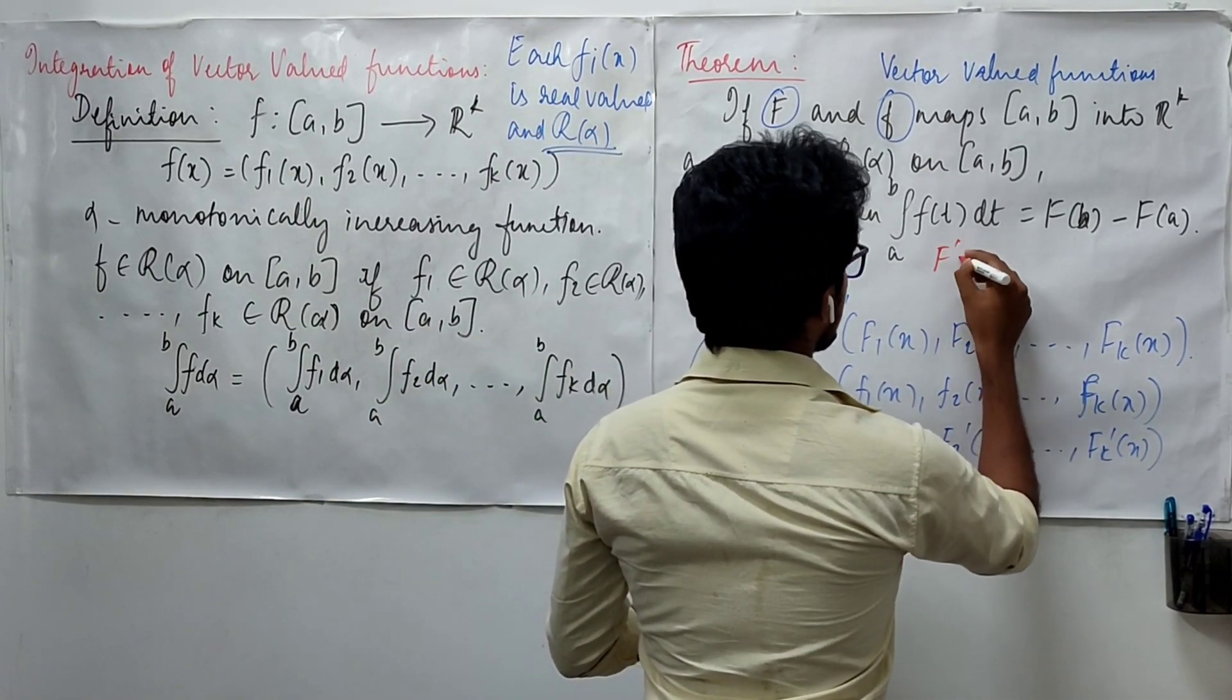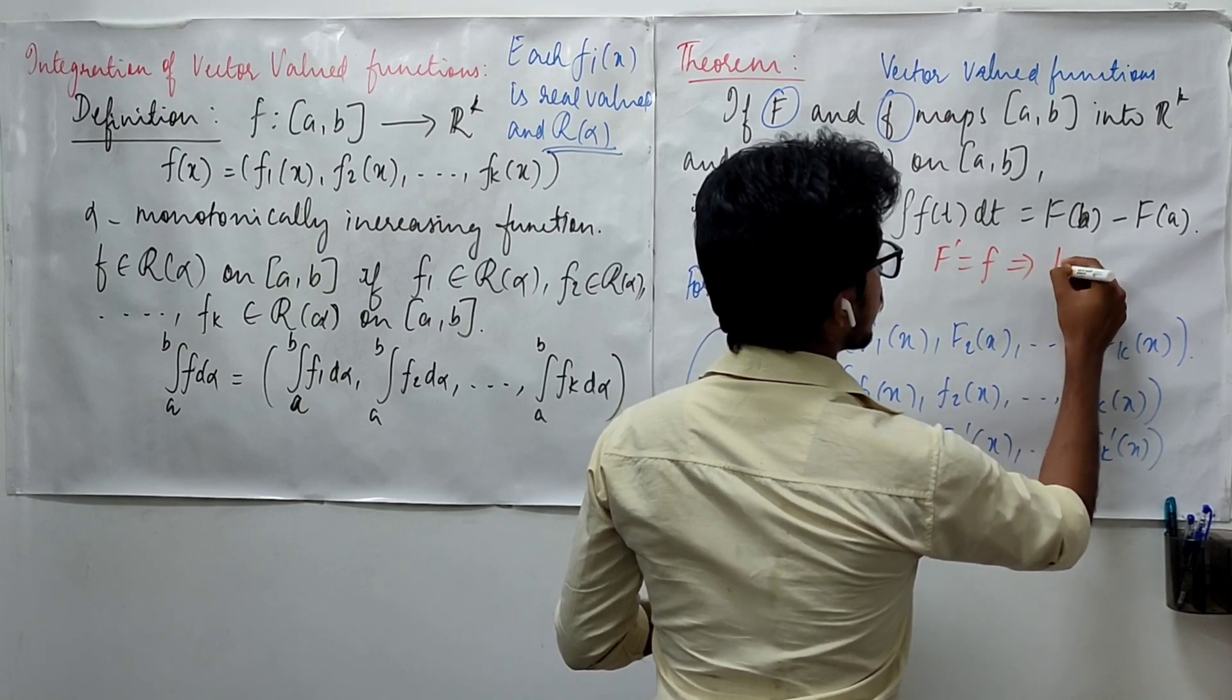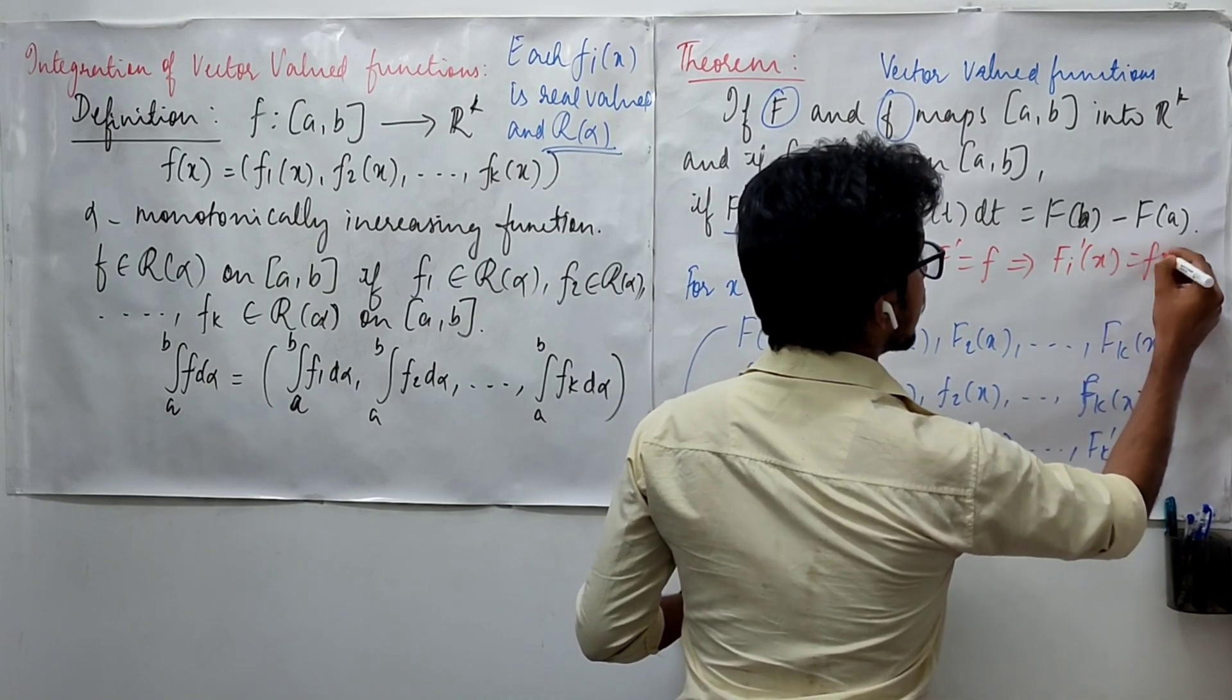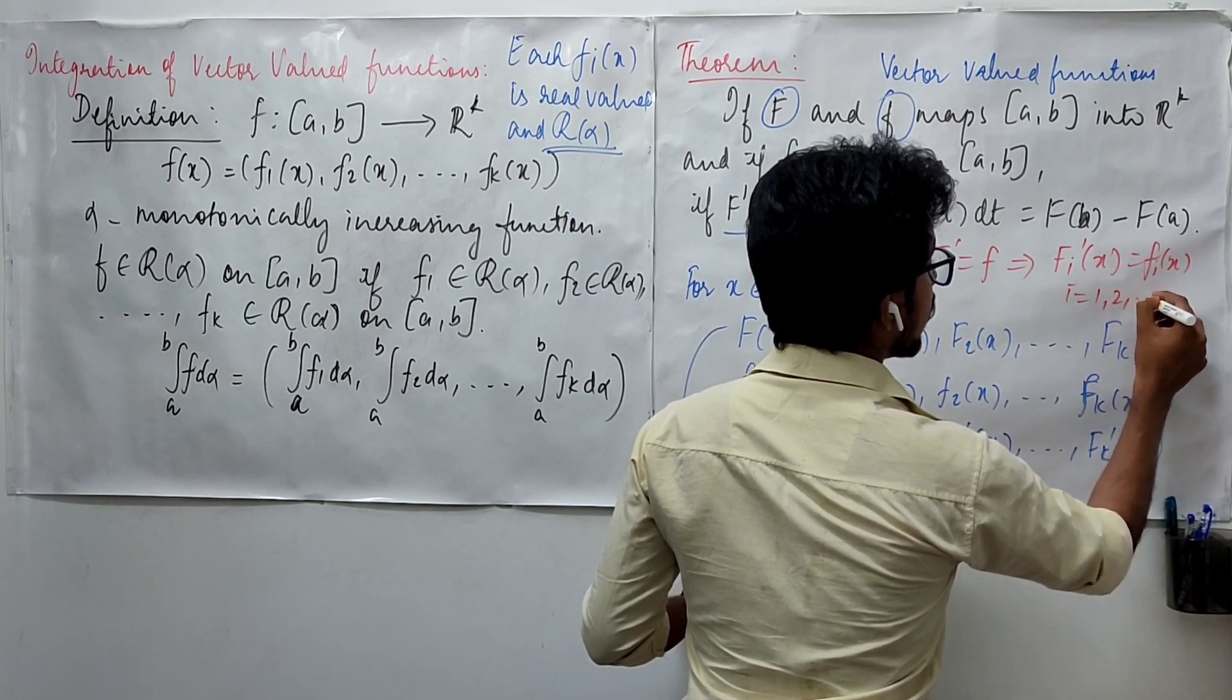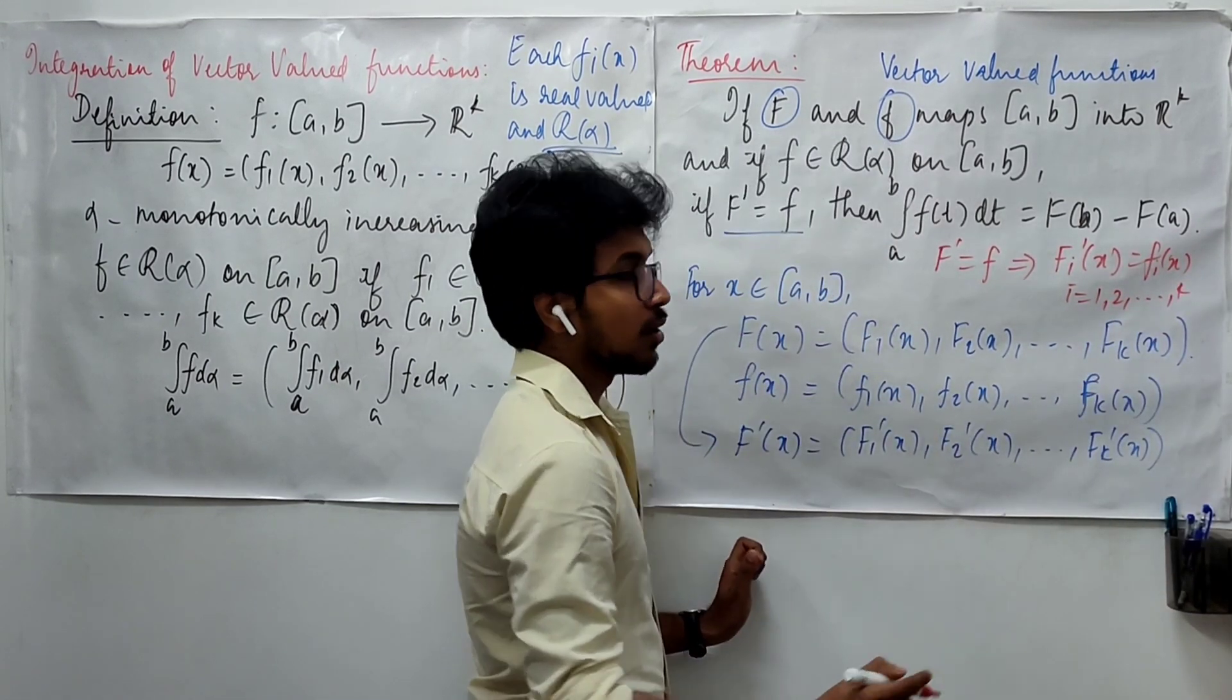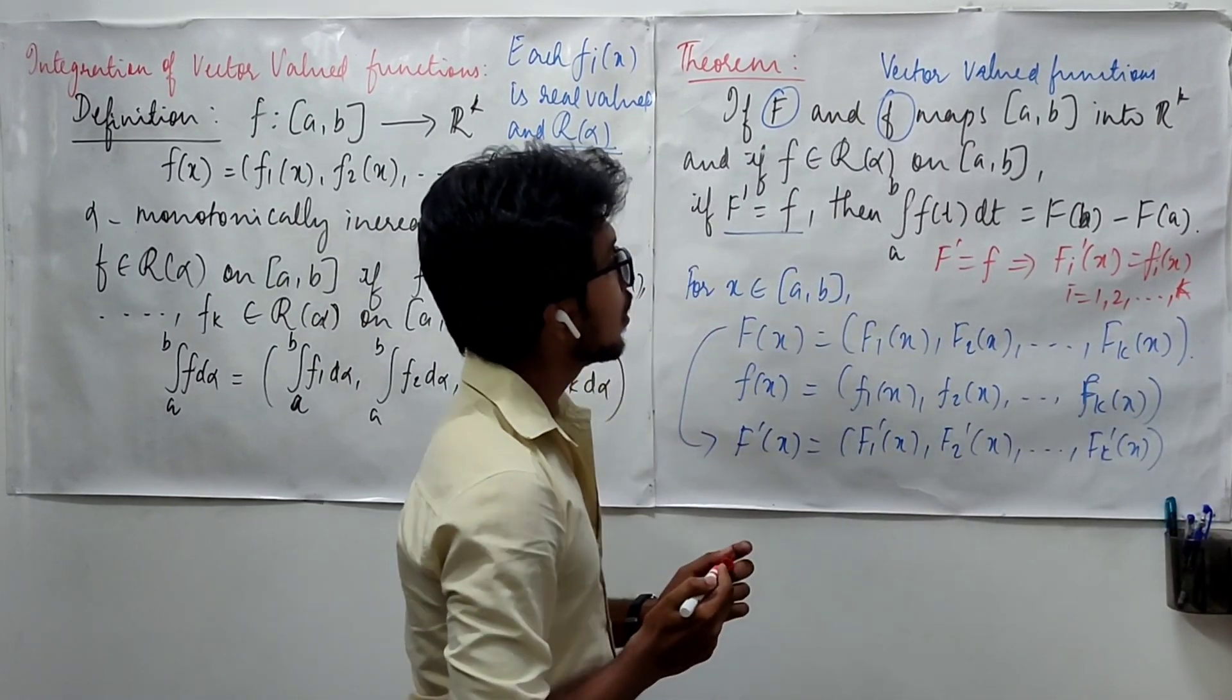This is given. So, this tells you that your fi prime of x is simply fi(x) and this is true for all i from 1 to k.